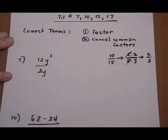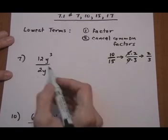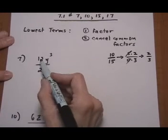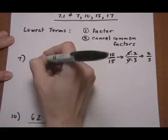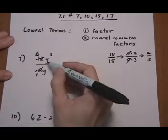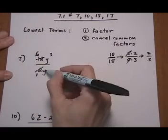So we have 12y cubed over 2y. So let's think of what they have in common. The 2 and the 12 both contain a 2. So let's divide by 2 top and bottom. So it leaves us a 6 over a 1. And then y cubed over y.